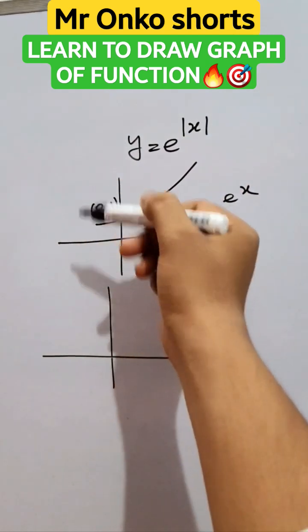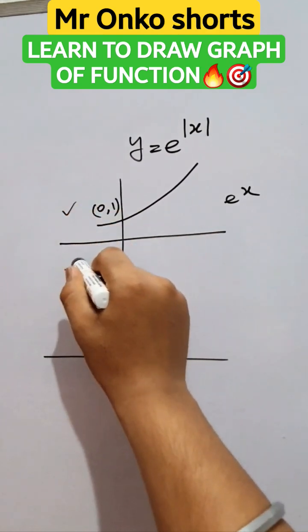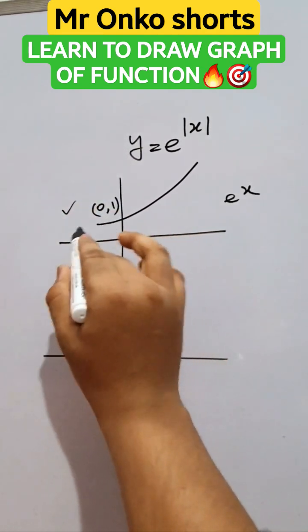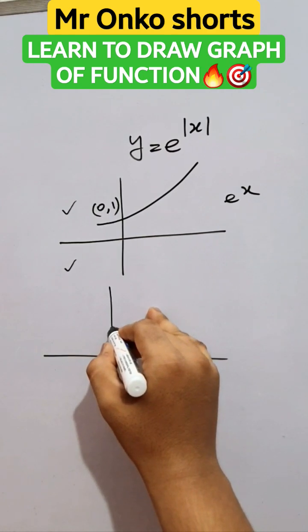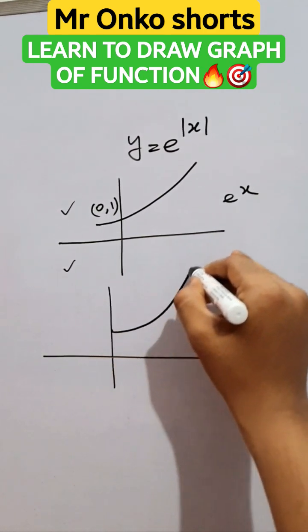So the negative part of x, that is this quadrant and this quadrant, will be removed. So this part will be removed and it will be like this.